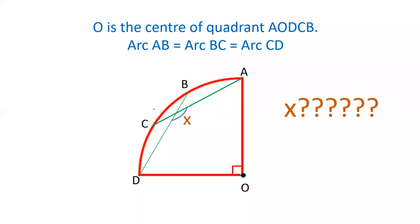Hello friends! Welcome to our YouTube channel, SSSElector. In today's video, we are going to discuss a question where there is a quadrant of the circle AODCB. The points B and C are given such that the length of arc AB is equal to length of arc BC is equal to length of arc CD.